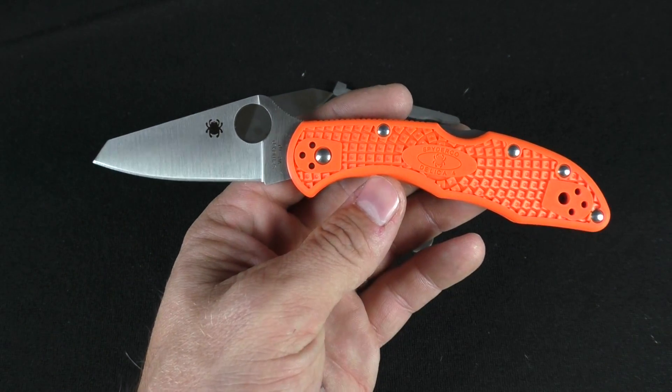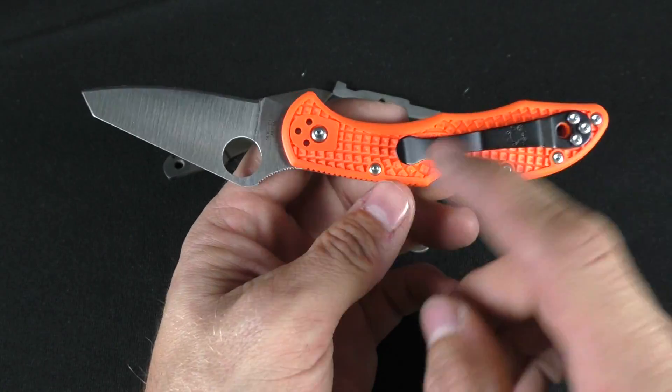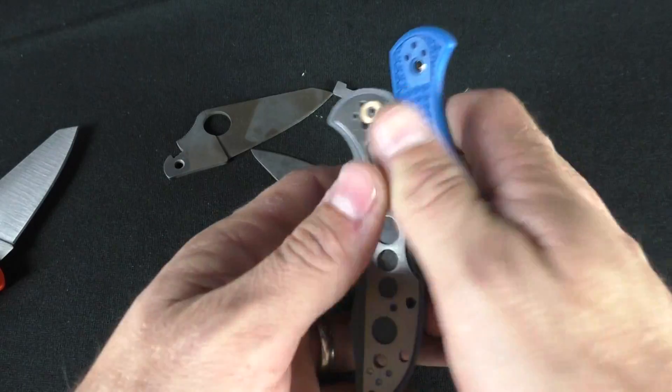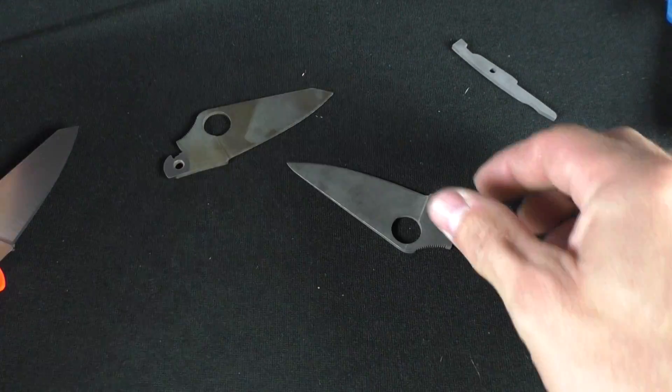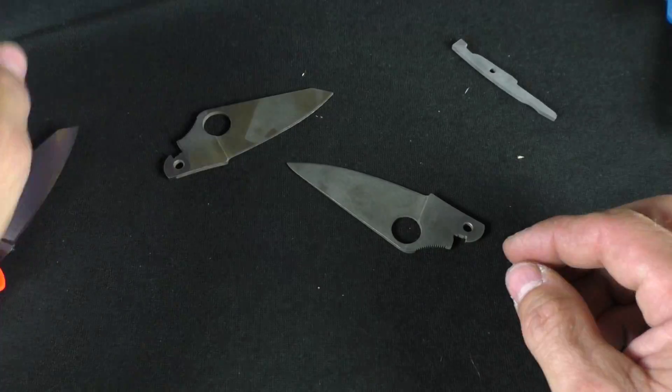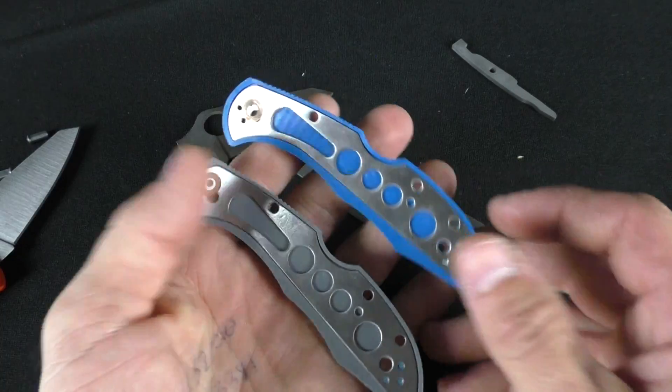That will be done first and then it'll go over into another area where it'll be completely disassembled, all the way down to the scales, to the lock bar, blade, and screws.